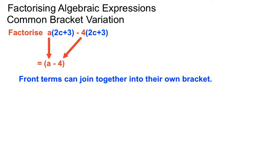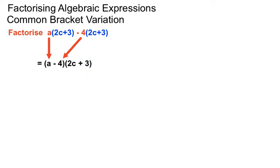We just list the 2c+3 bracket once and get that as our final result. Nice little shortcut really - the front numbers can join into their own bracket. That's the variation when you have common brackets and you're trying to factorize.